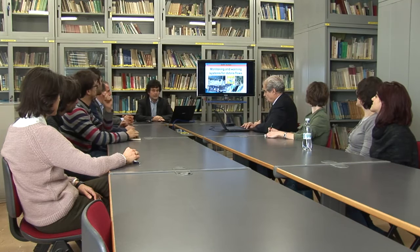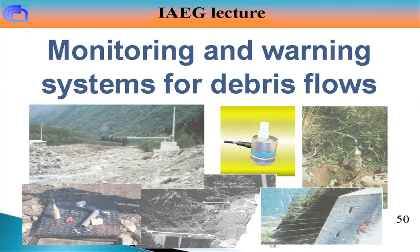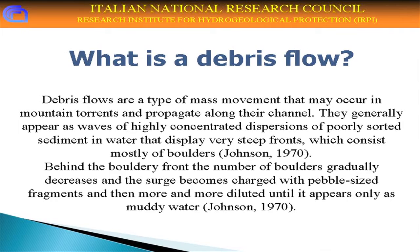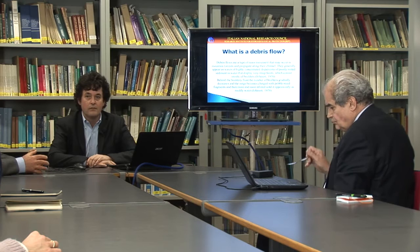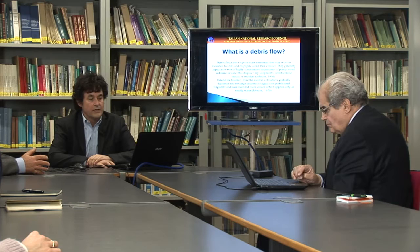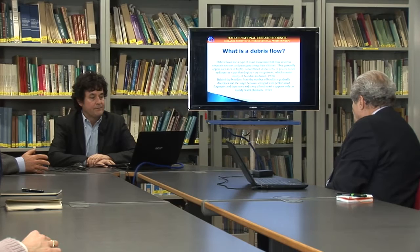In this lecture I will talk about debris flow monitoring and warning. A debris flow can be defined as a type of mass movement that may occur in mountain torrents, appearing as a wave with a steep front consisting mainly of boulders. It consists of a mixture of very poorly sorted sediments in water, ranging from boulder-size fragments down to clay. After this steep front, the flow height diminishes until it appears just as muddy water.